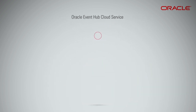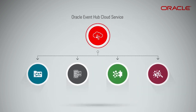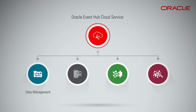The Event Hub Cloud Service has tight integrations with other PaaS service layers like data management, application development, data integration and analytics in big data. This provides a complete end-to-end solution that is ready for use.